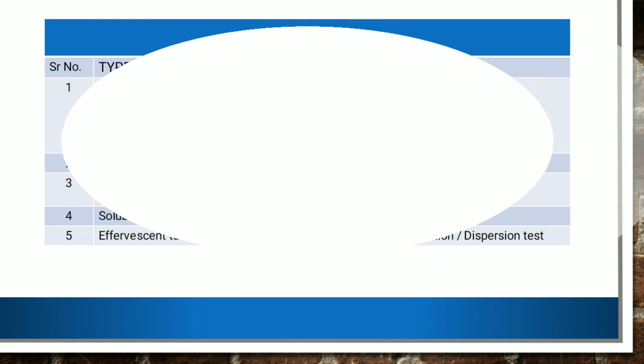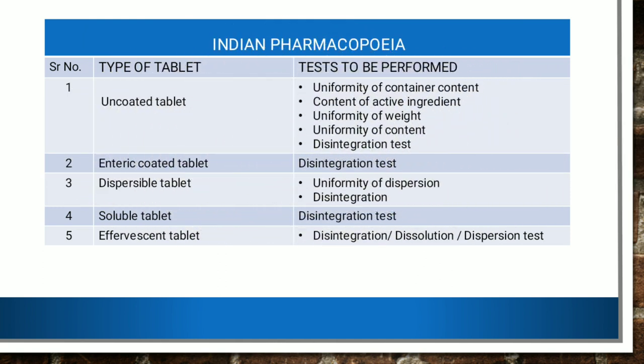The first one is IP. According to Indian Pharmacopoeia, for uncoated tablets, the tests that need to be performed are: uniformity of container content, content of active ingredient, uniformity of weight, uniformity of content, and disintegration test. So all these tests are performed for uncoated tablets.